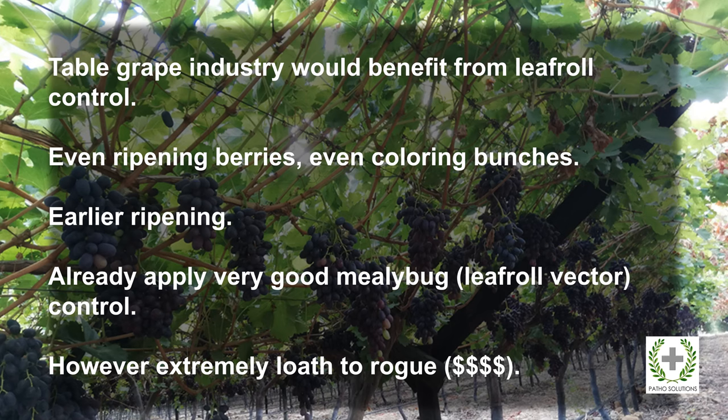Table grape growers would benefit from leafroll control; the anticipated evening of ripening of berries, even coloring of bunches, and earlier ripening are all desirable properties within this highly lucrative export commodity. Furthermore, they already apply very good mealybug control because of the pest status of this insect within bunches. However, growers are extremely reluctant to apply roguing of infected vines based on the monetary value that each individual vine has for them.